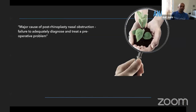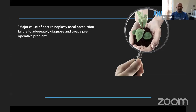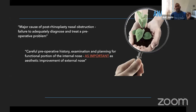An important point: in a major number of post-septorhinoplasty nasal obstruction cases, these are due to failure to adequately diagnose and treat pre-operative situations. Any underlying conditions must be looked at and treated before we go in for nasal breathing or aesthetics. Therefore, careful pre-operative history, examination, and planning for functional portions of the internal nose is as important as the aesthetic improvement of the external nose.